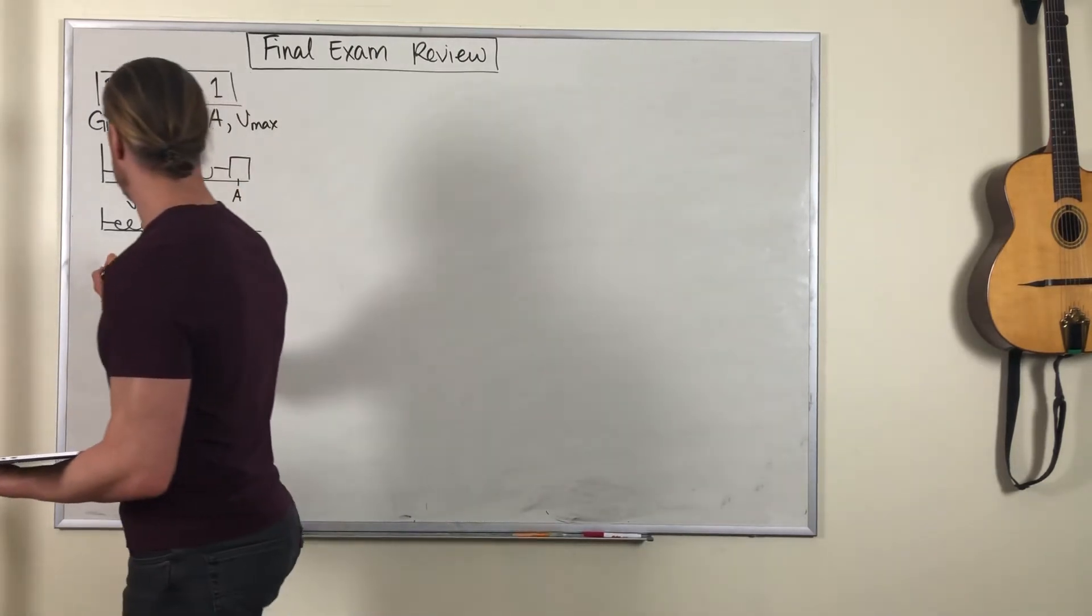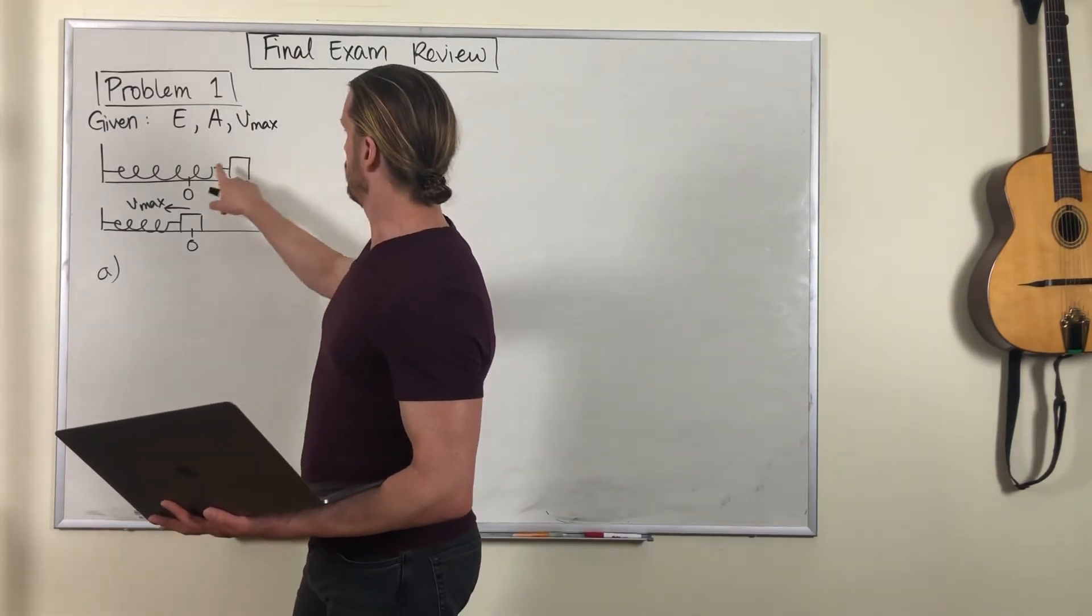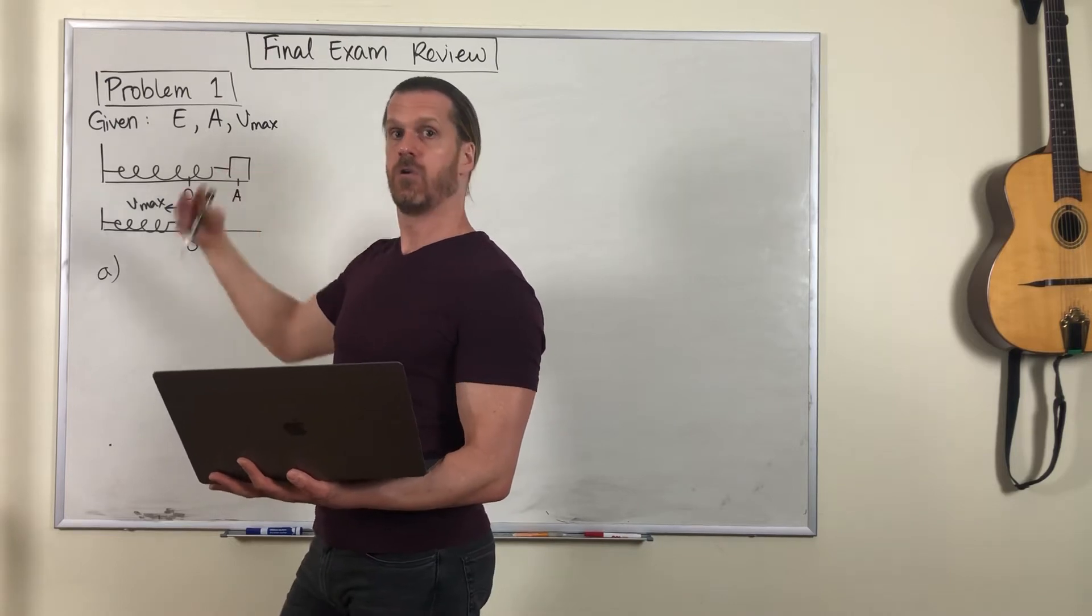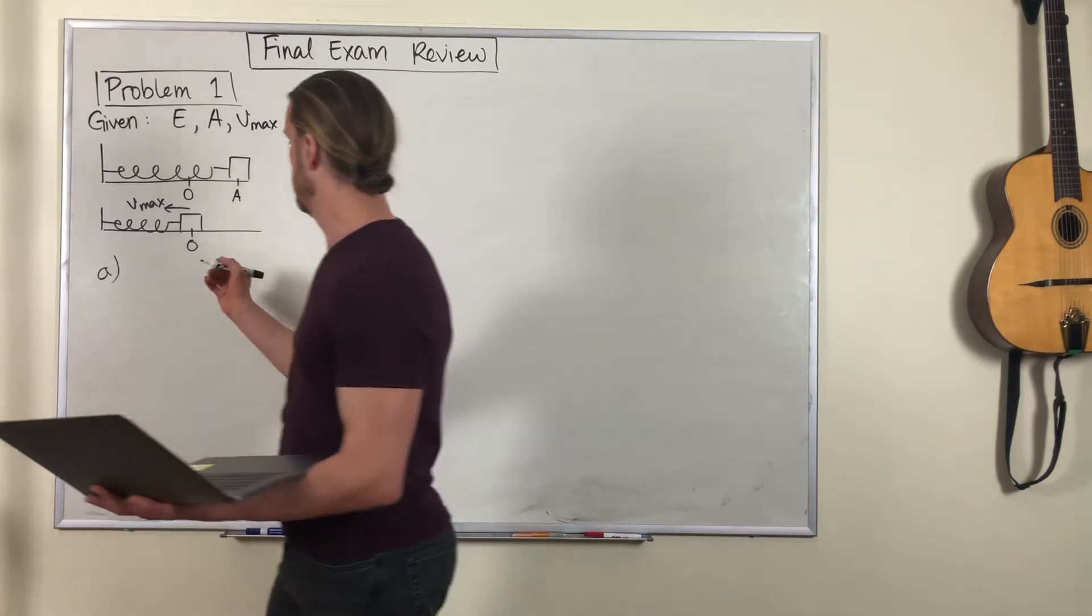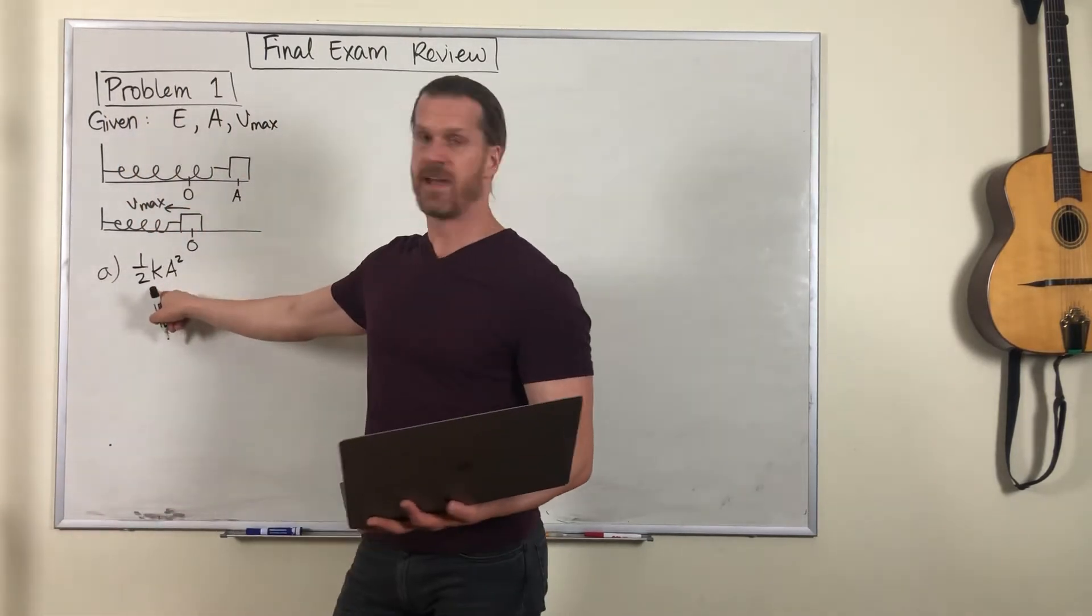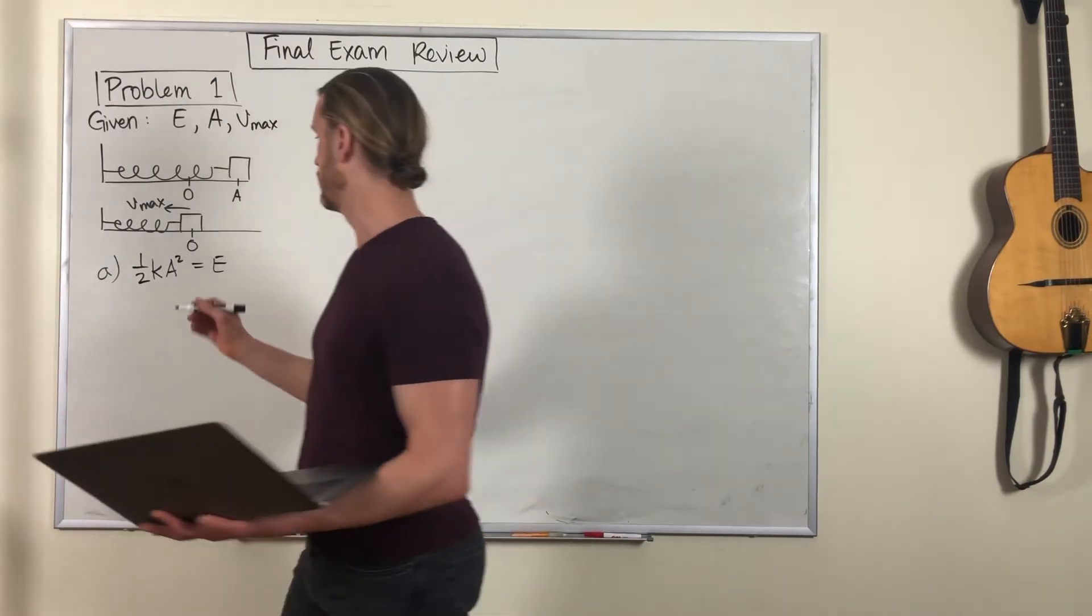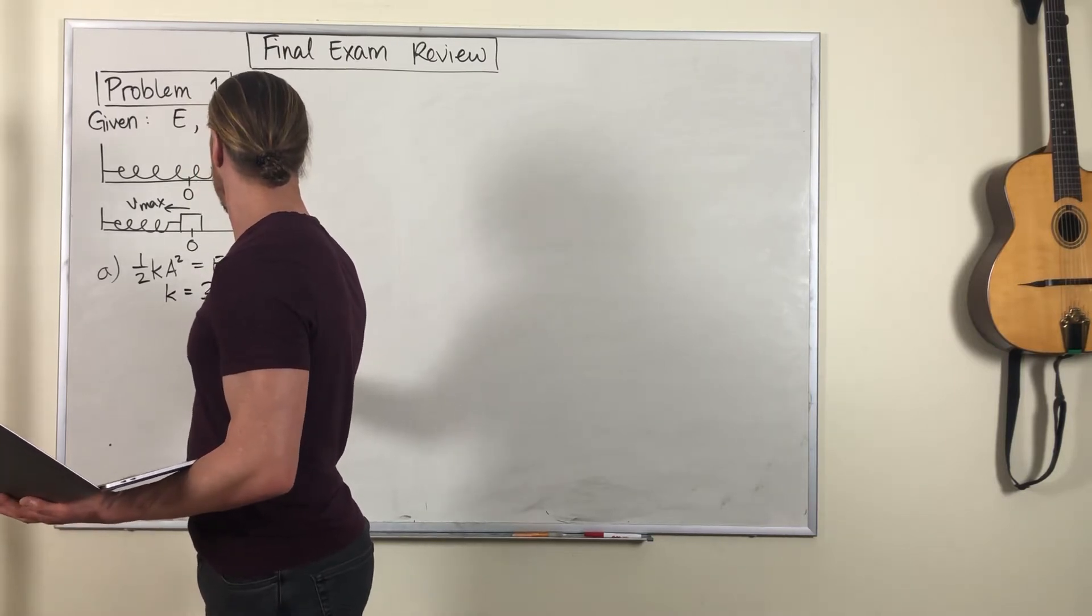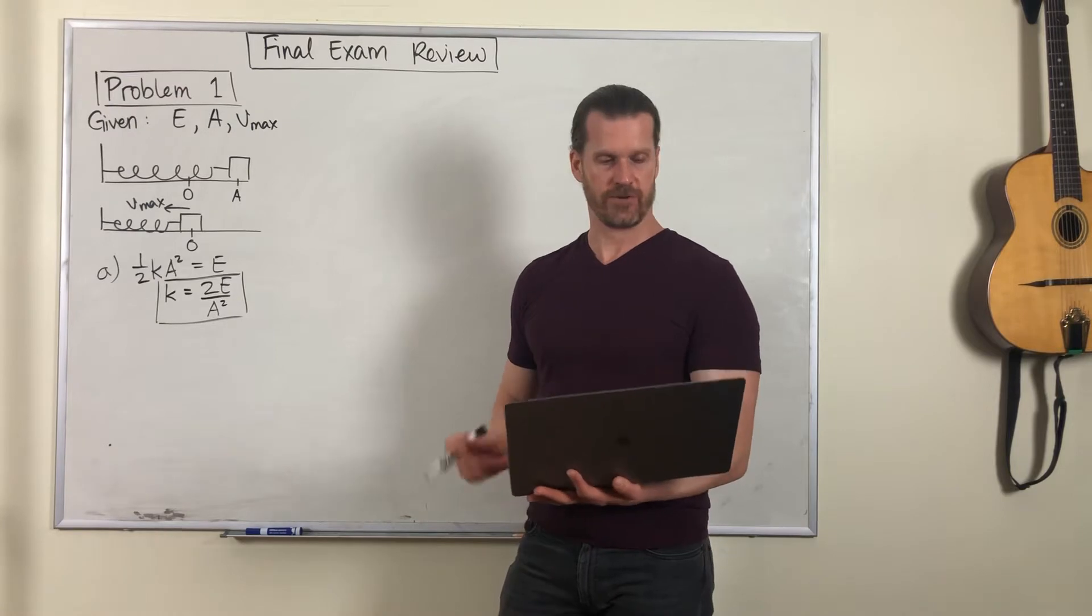First question, part A. What is the spring constant? Well, we know that at the beginning of the situation, when the spring is pulled all the way back, all of the energy in the system is potential energy, spring potential energy. None of it's kinetic. So we can say that the spring potential energy at that initial point, one-half k a squared, equals that total energy value. And so with just a little bit of algebra, you can find the spring constant.